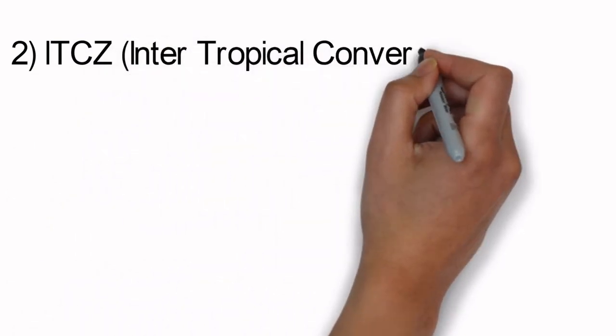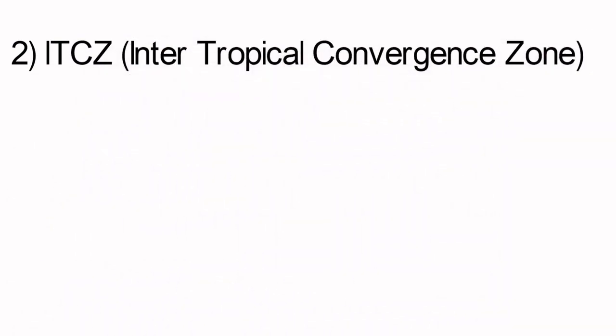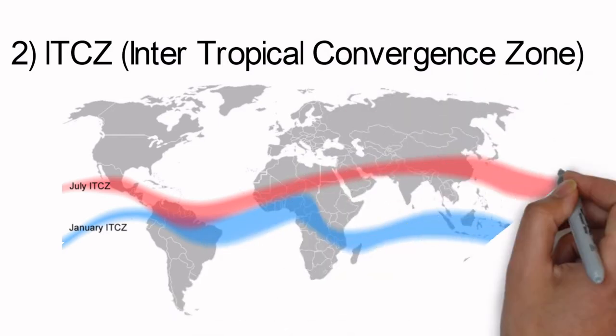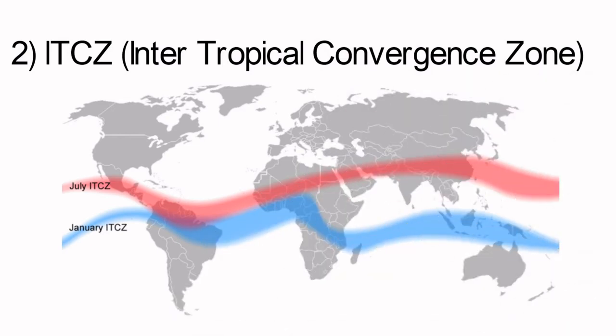Second, the Intertropical Convergence Zone. It is the zone or belt of low pressure areas around the equator. It moves northward and southward in their respective summers. In these areas, tropical cyclones form.